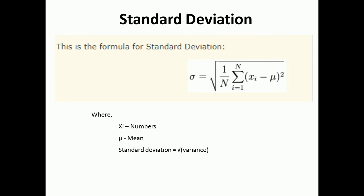The formula for calculation of standard deviation is given by: standard deviation is denoted by the symbol sigma, and is given by the formula square root of 1 divided by n, summation of i equal to 1 to n, of xi minus mu whole square, where xi represents the individual real numbers, with i ranging from 1 to n.